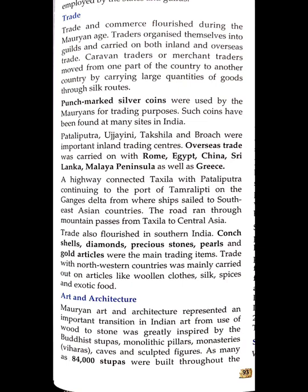Flourishing trade also existed in southern India. Conch shell, diamonds, precious stones, pearls, and gold articles were the main trading items. Trade with northwestern countries was mainly carried out in articles like woolen cloth, silk, spices, and exotic foods.